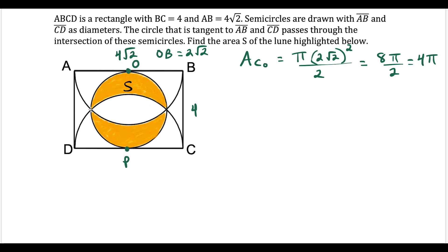Now I want to look at all four of these points: the center, the center, and then the intersection of the circle that's tangent to AB and CD and crosses through the intersection point of the two semicircles — and I want to connect these four points. Remember OB was two radical two, and since these all go from the center to a point on the semicircle, I can say that all of these are two square root two. If I do the same thing down here, this is also two square root two all around — so I have a square.